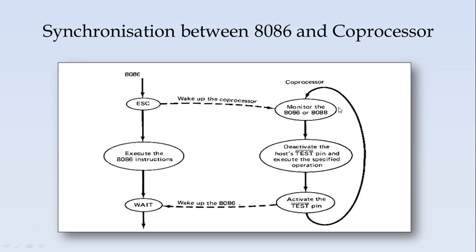After waking up the coprocessor, it monitors the 8086 for any instructions. When the instruction is for the coprocessor, it deactivates the host TEST pin, indicating that it is executing the specified operation in its coprocessor mode. Once the operation is complete, it activates the TEST pin so that the 8086 knows to resume its original operation using the address and data bus. After activating the TEST pin, the coprocessor again goes into monitor mode, waiting for any other coprocessor instruction.